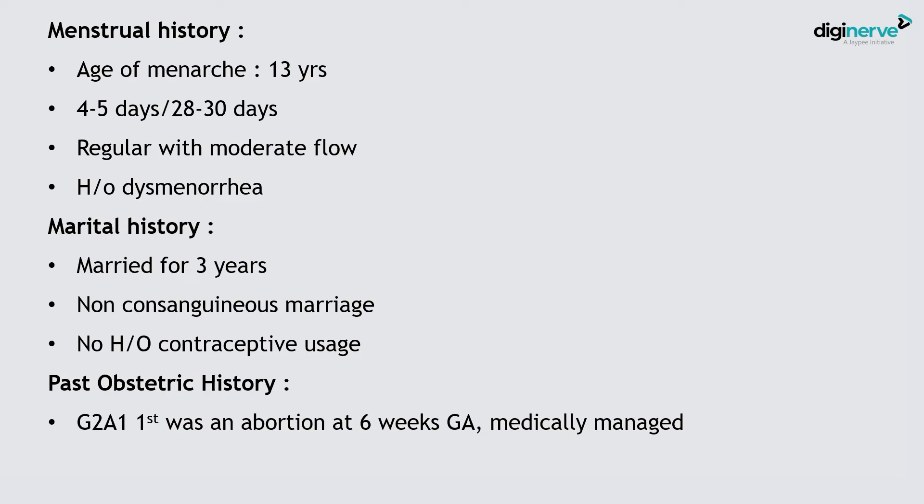Past obstetric history: she is Gravida 2, abortion 1; first was an abortion at 6 weeks gestational age, medically managed. A history of previous ectopic increases risk five-fold. Previous abortion is also significant because post-abortion infection can lead to PID, which is the most common cause of ectopic pregnancy.